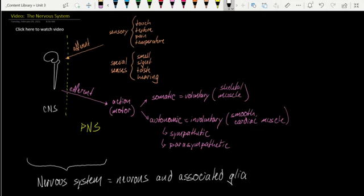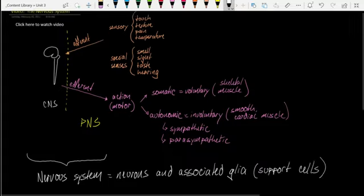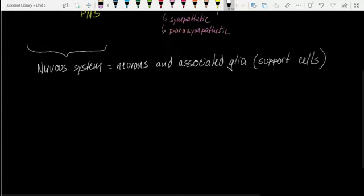Of course, glia are just support cells that help support and regulate neuronal function. And as we've just mentioned, the nervous system is composed of the central nervous system, the peripheral nervous system...